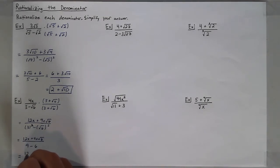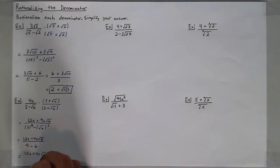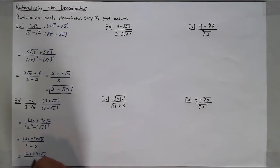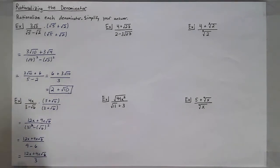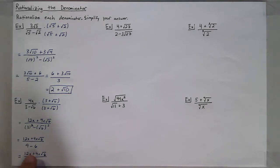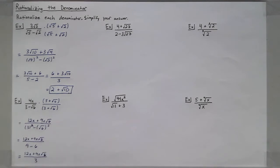So I have 12x plus 4x square root of 6, all over 3. You may ask yourself whether you should divide that 12 by 3 — only if you want to separate these two terms up top.